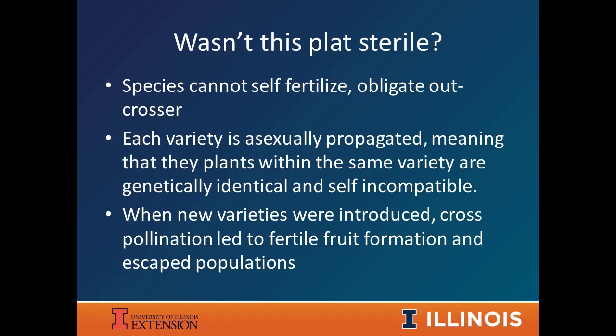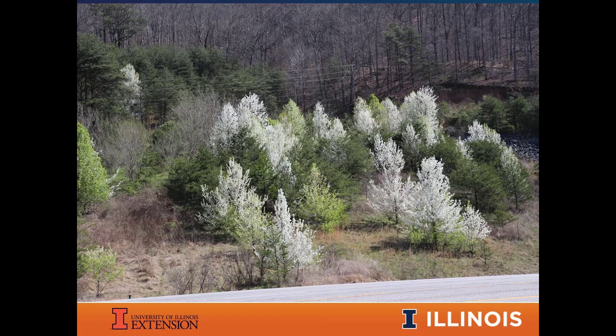Callery pear flowers before it leafs out in early spring with five white petal flowers. Many people were told it was sterile, and it didn't spread for years because it's self-infertile — it needs a different individual to pollinate. The cultivars are all asexually reproduced from stem cuttings, so they're all genetically the same individual and can't pollinate each other. But when new different cultivars were planted on the landscape, they started cross-pollinating, and after 20 to 30 years we suddenly started seeing fertile fruit being produced and this plant begin to escape.